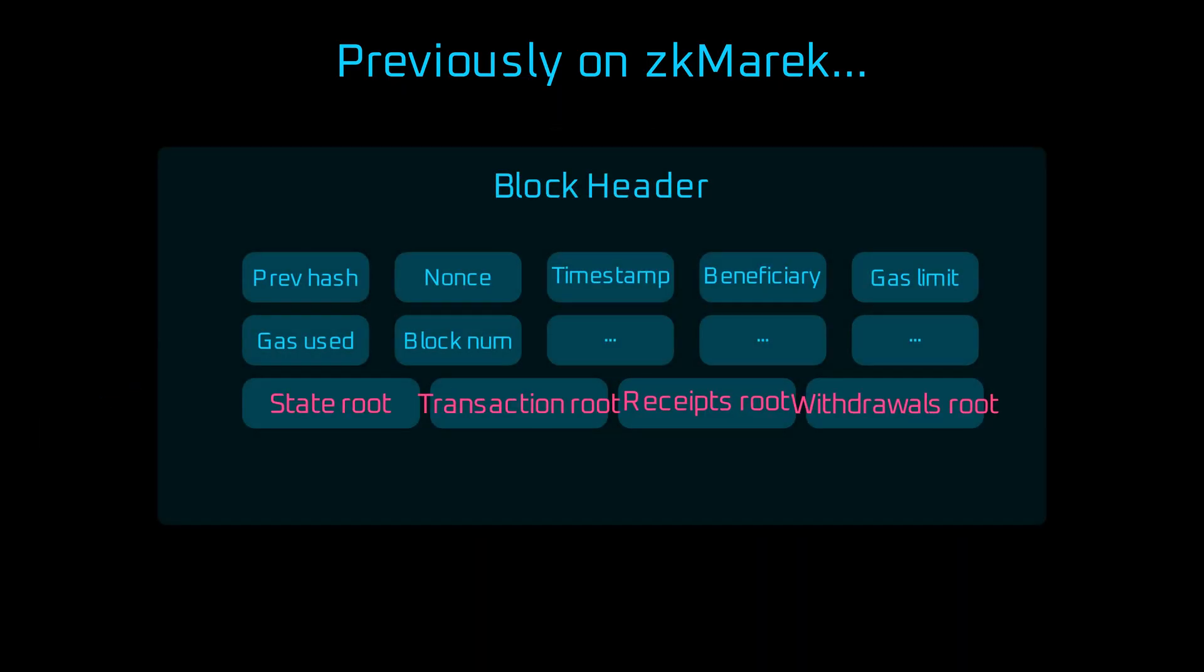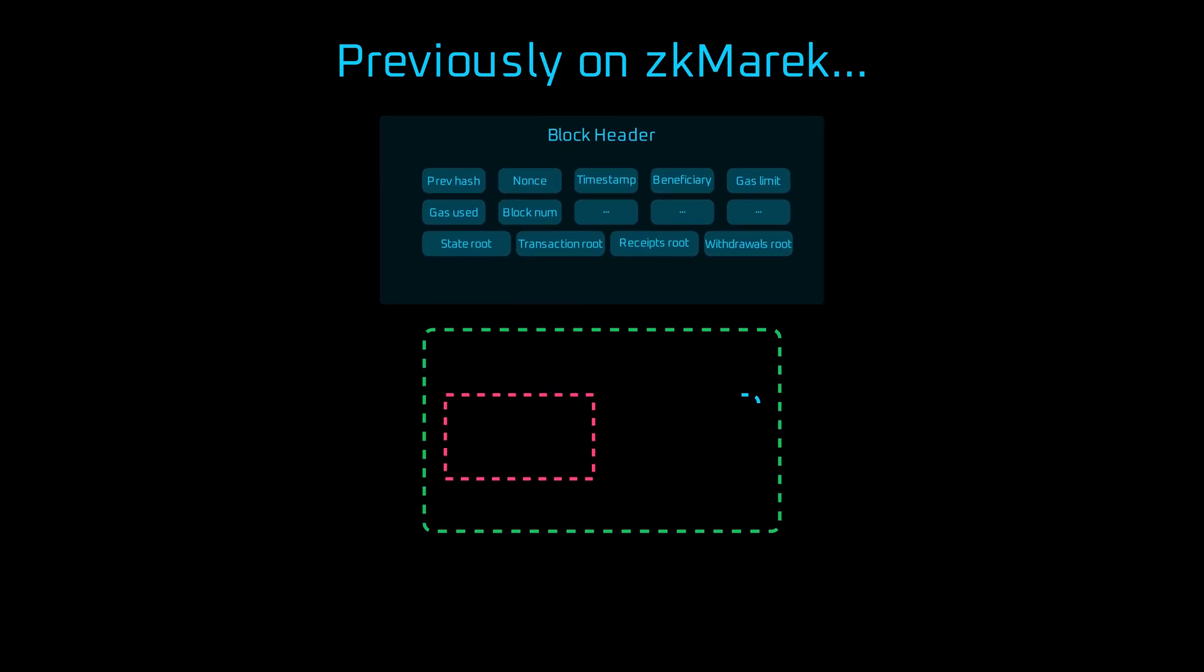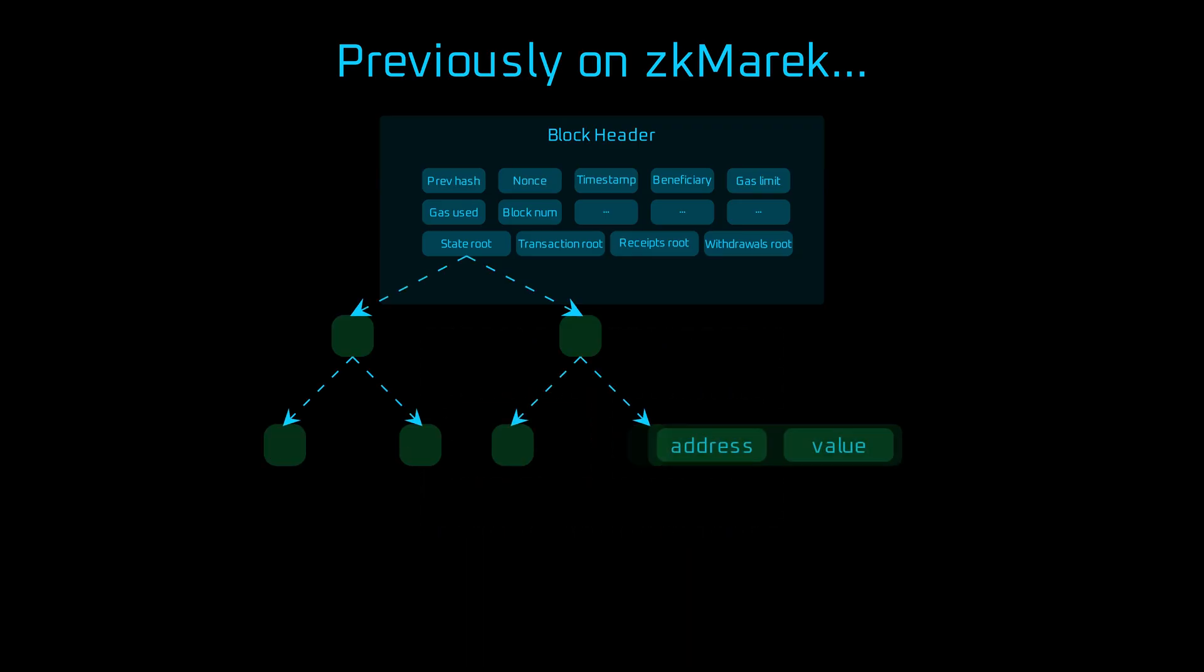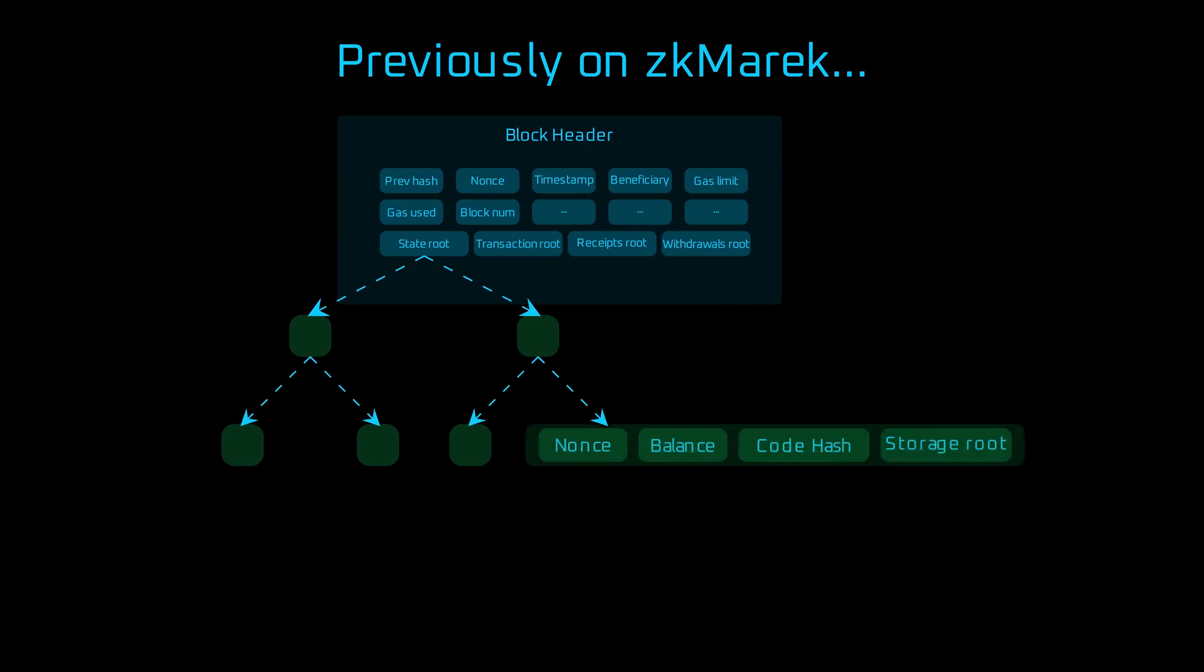Ethereum in each block stores four merkle-patricia tries: State, transaction, receipt, and withdrawals. Each try stores key value data for their specific purpose. For example, for state root, key is an address, and value is a four-item array including storage root.